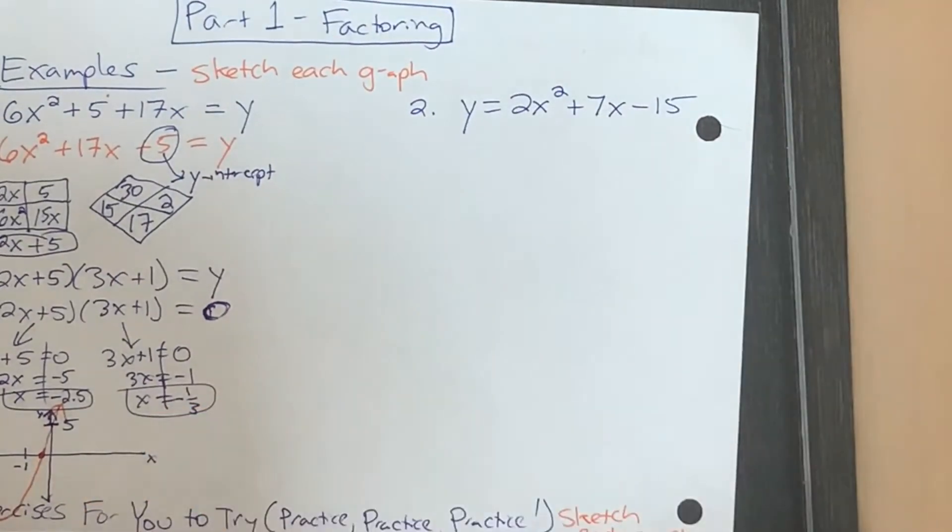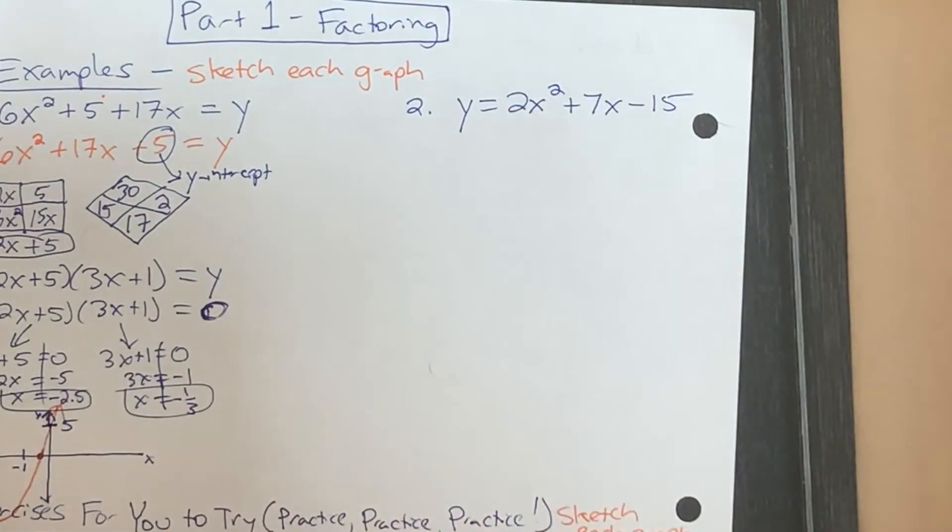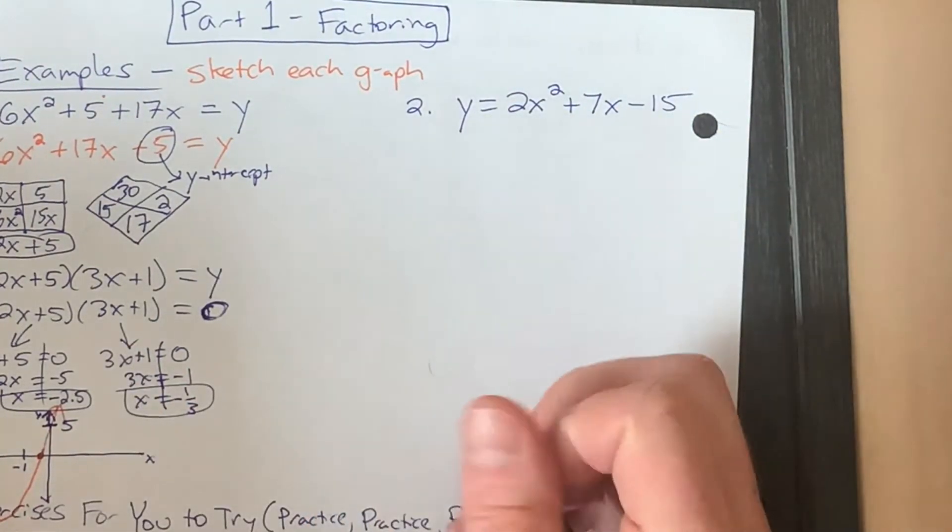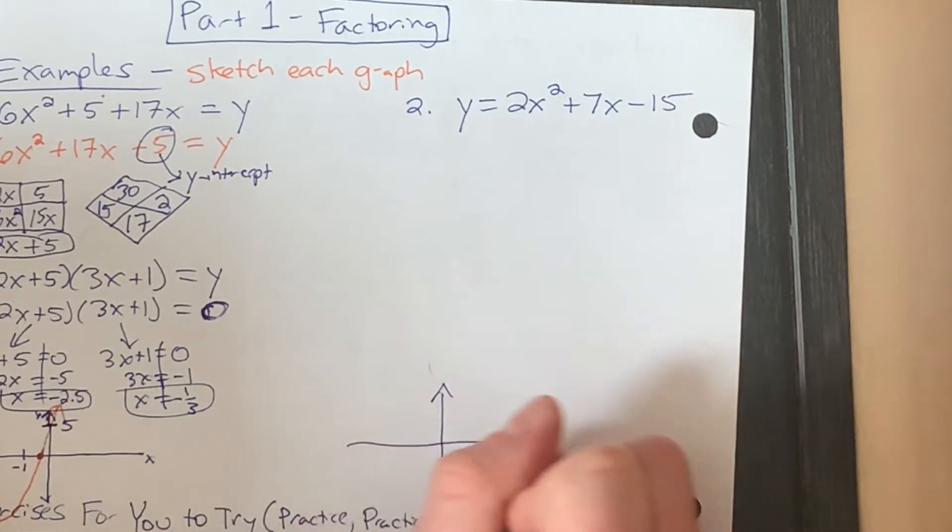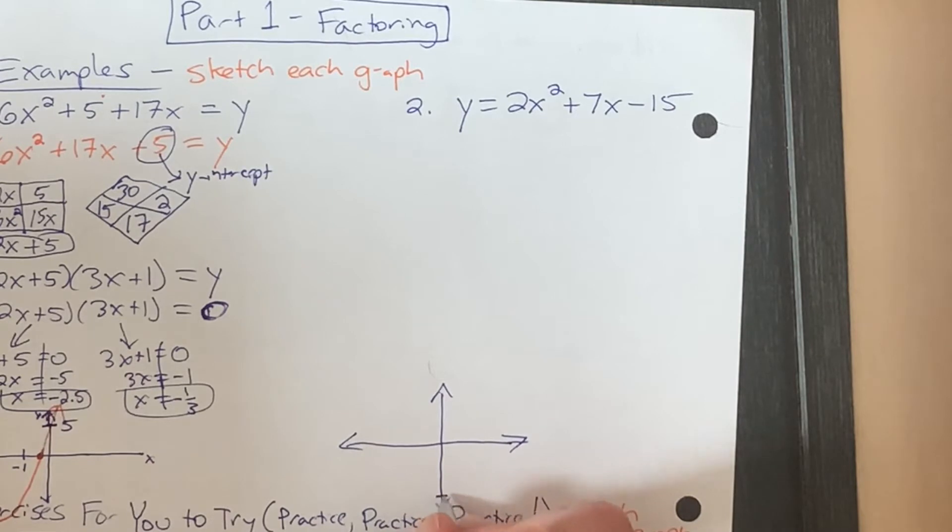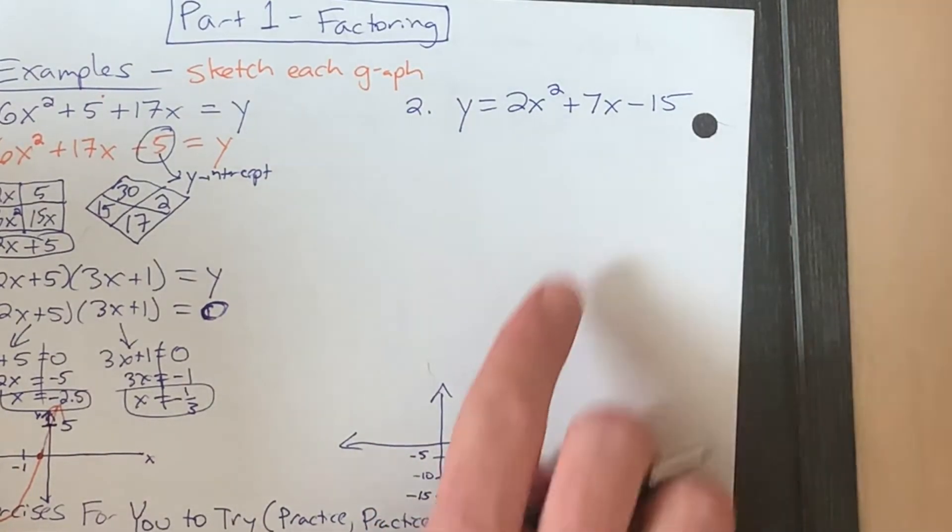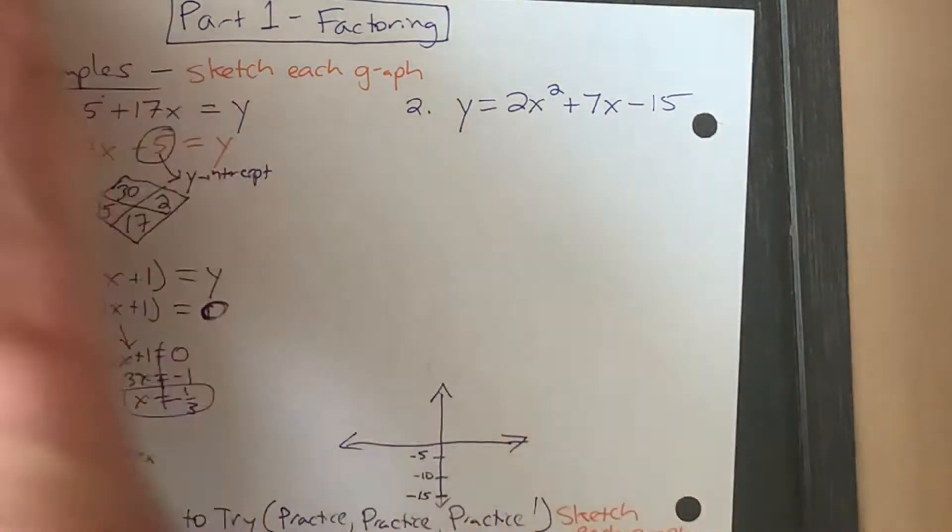Second example, let's do this one real quick. Is it written in standard form? Yes, it is. We're gonna know we're gonna have a y-intercept at negative 15, so I'm just gonna put that on the graph right now. Feel free to do that. Let's say that this is negative 15. This is negative 10. This is negative 5. Give it some sense of scaling down here. So we have our y-intercept, and that's gonna be at negative 15.